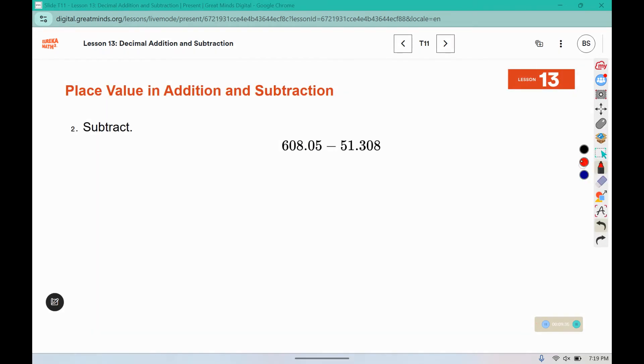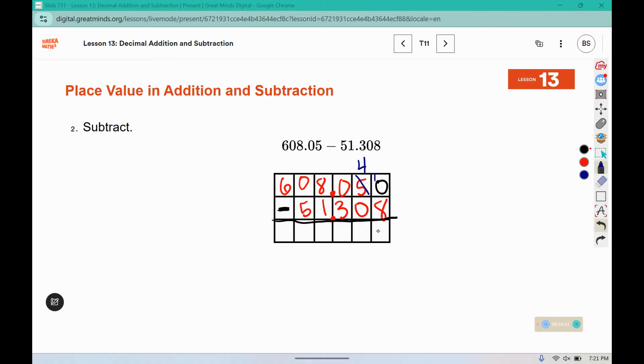Here we are going to subtract. It might be helpful to display a grid or some form of lines on your paper to remind you to line up your decimal spots. So I have 608.05 minus 51.308. So I'm going to line up those decimals, and this is a subtraction problem. Regroup from your 5 here. 10 minus 8 is 2. 4 minus 0 is 4. 10 minus 3 is 7. 7 minus 1 is 6. 10 minus 5 is 5, and 5 minus nothing is 5. So this is 556.742.